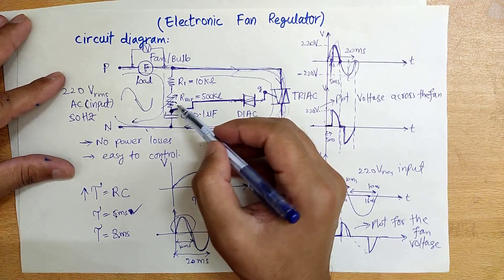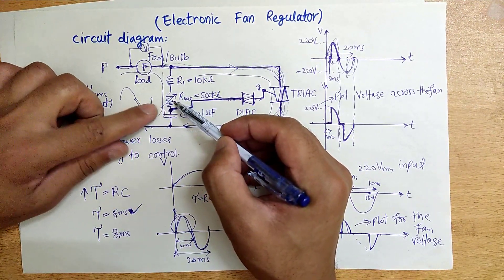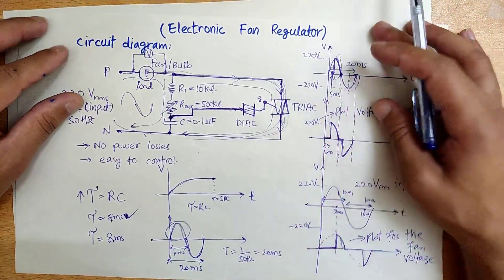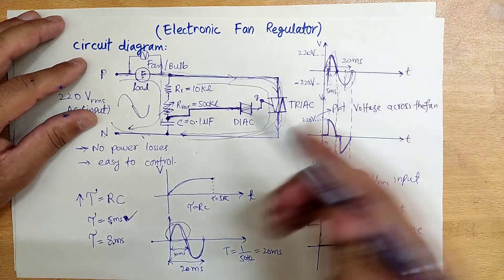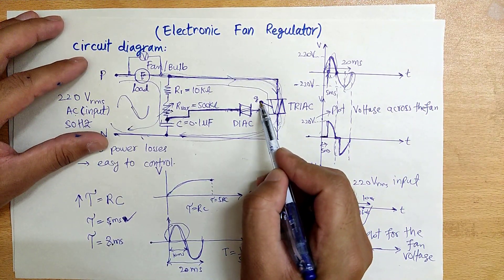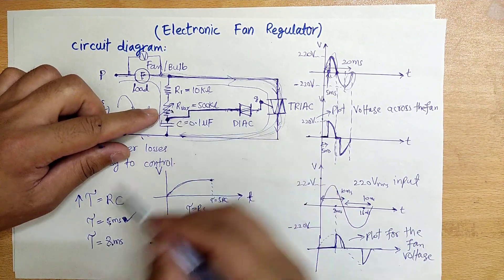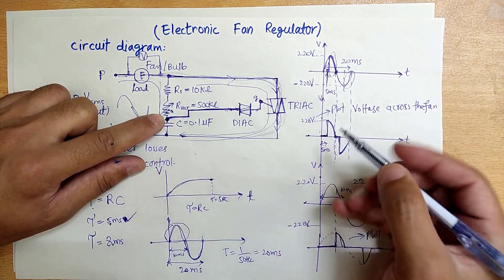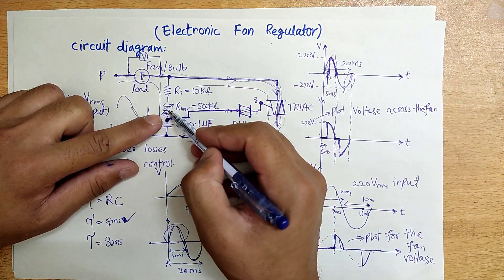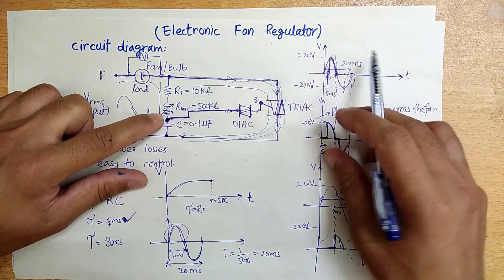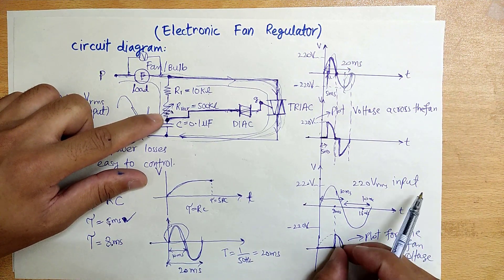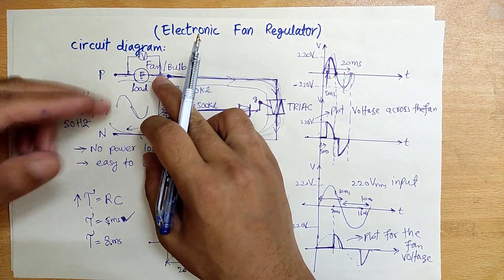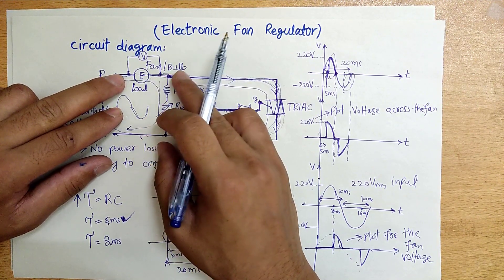By increasing the value of the variable resistor, we increase the time constant, meaning the capacitor takes more time to charge to the DIAC breakdown voltage. By lowering the resistor value, the capacitor charges faster, giving more voltage to the fan. So increasing the variable resistor decreases the RMS voltage across the fan, decreasing fan speed or bulb intensity; decreasing the resistor increases the RMS voltage and fan speed.